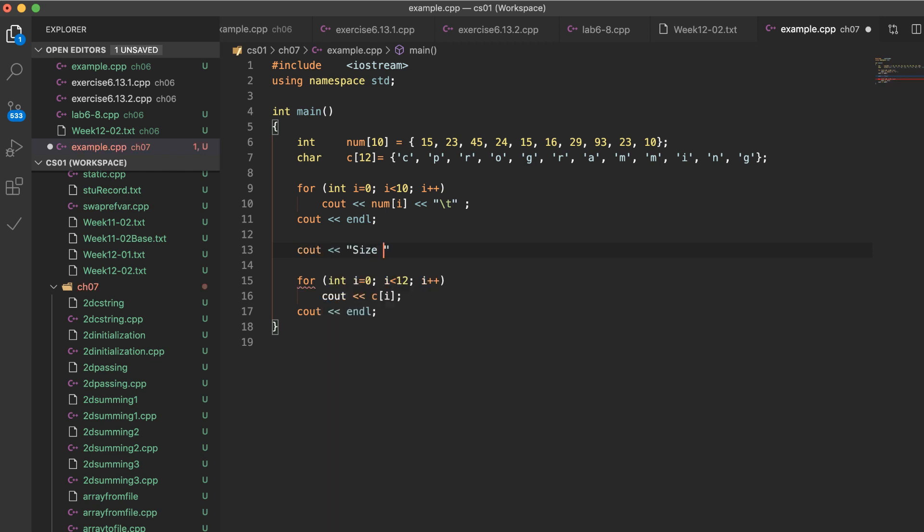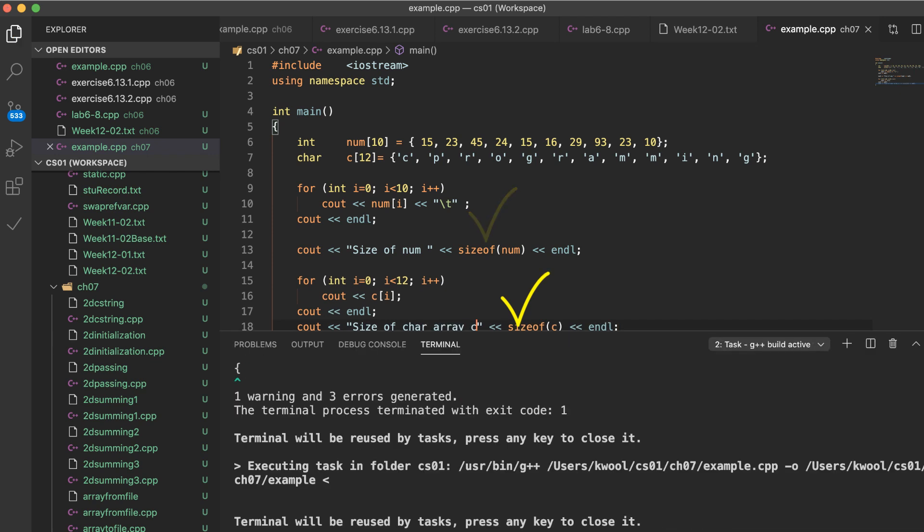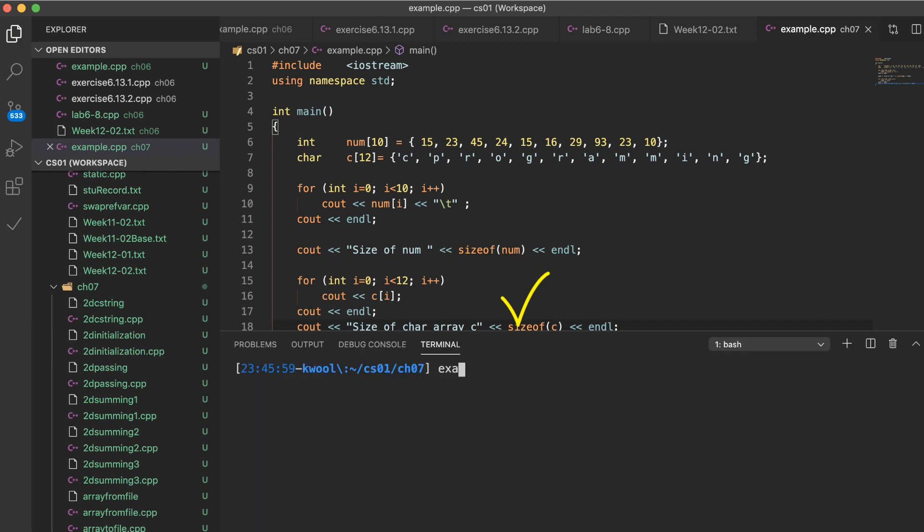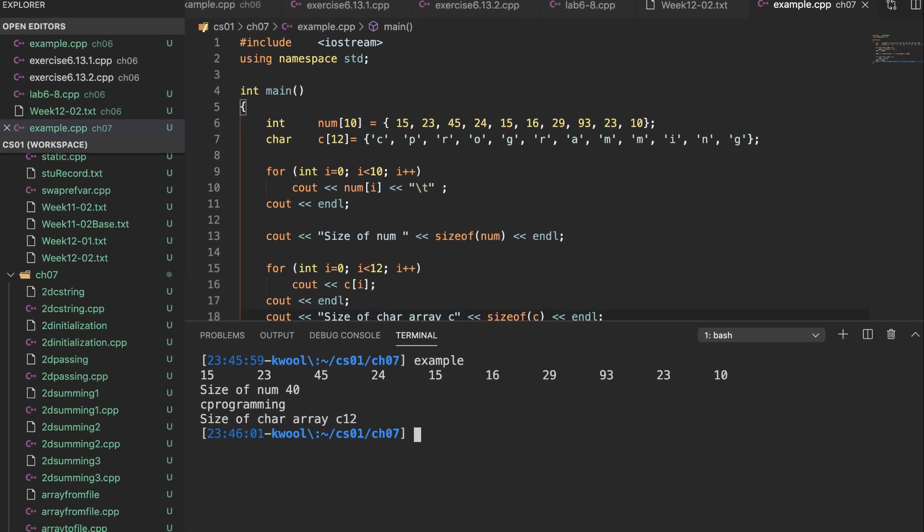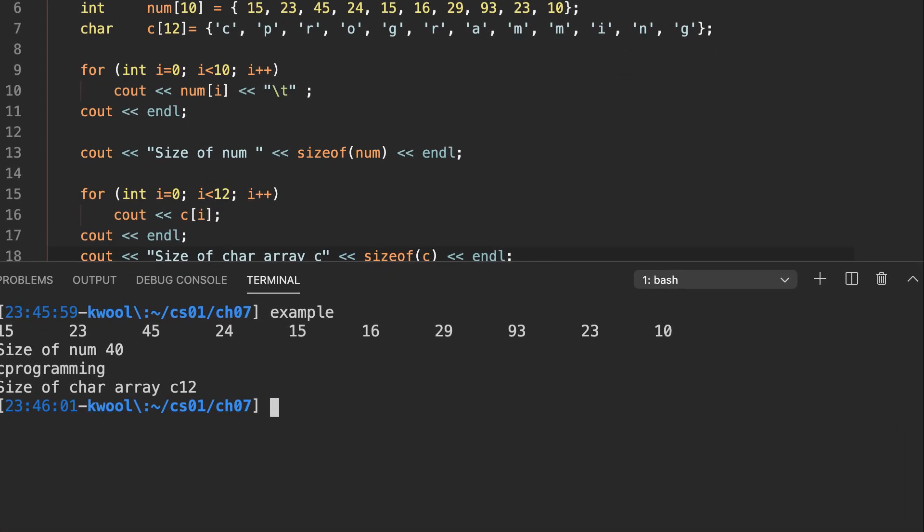And then I'm going to make a statement to check the size of each array. I will use the function sizeof to check each array. And we can see each size of array. The first integer array has 40 bytes and the second character array has 12 bytes.